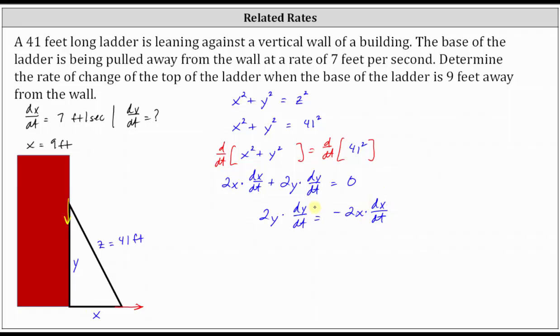And the final step to solve for dy dt is to divide both sides by two Y. Simplifying, we have dy dt equals, of course, two divided by two simplifies to one. We have negative X times dx dt all divided by Y.